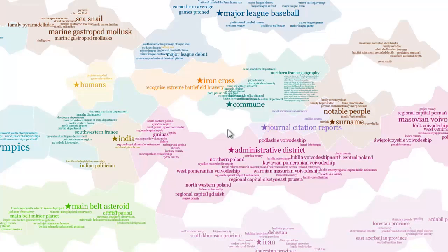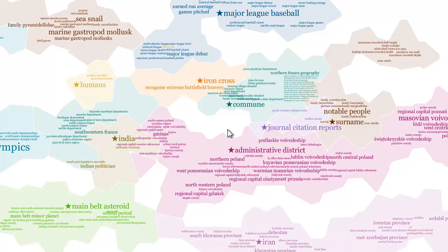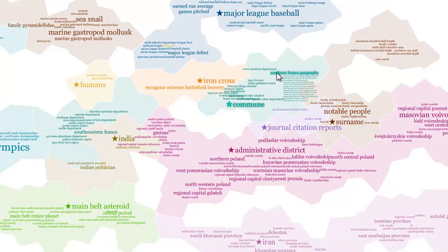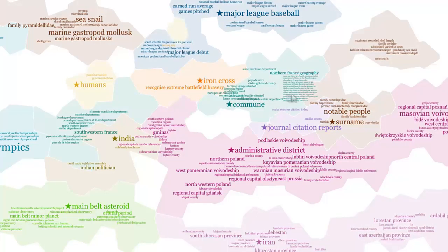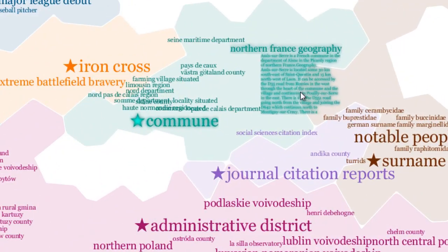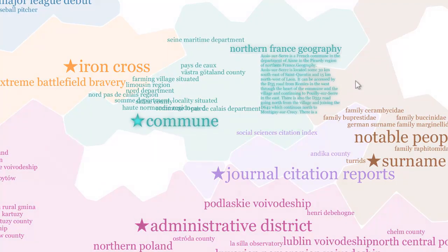Additionally, snippets or paragraphs of content appear on the canvas to show more detail regarding how these terms are used within the data. Each cluster is further identified through the use of a unique color for the font and background.